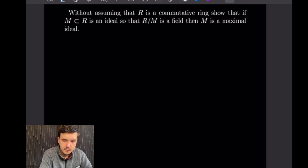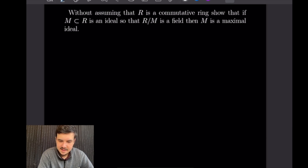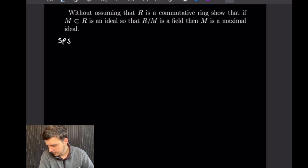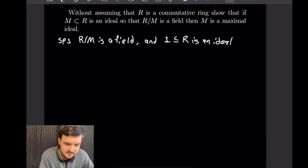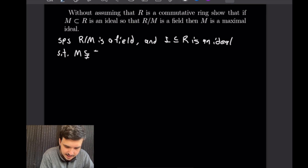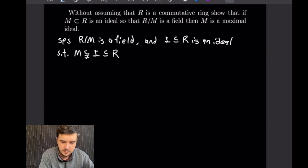For this next example we want to show, without assuming R is commutative, that if M is an ideal of R such that R mod M is a field, then M is a maximal ideal. To start, suppose that R mod M is a field, and that I is an ideal with M ≠ I ⊆ R. We want to show it is impossible for an ideal I to exist strictly between M and R.